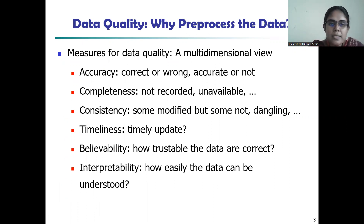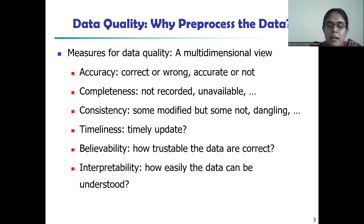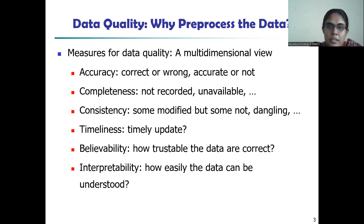By means of accuracy, we mean whether the given data is correct or wrong. By means of completeness, there should not be any missing value for any particular attribute. For example, in a table, if you have a list of tuples and each tuple is associated with a set of attributes, all the attributes should hold a value.